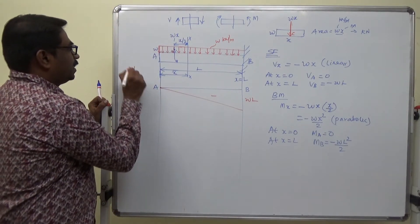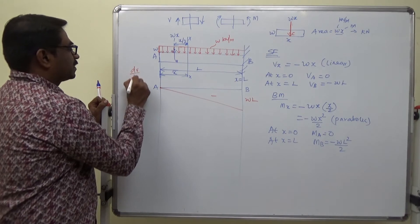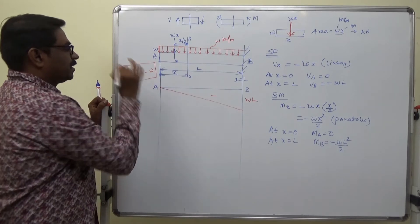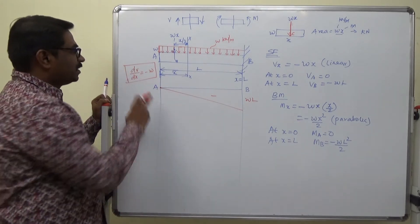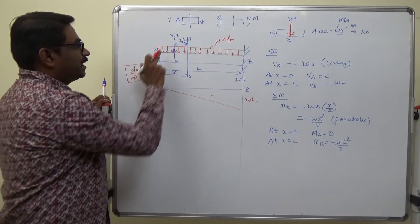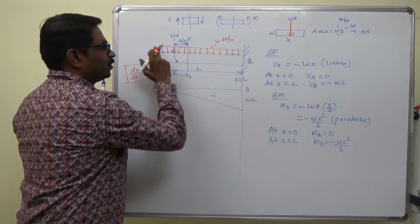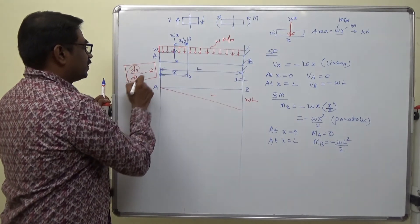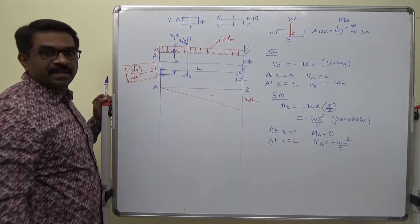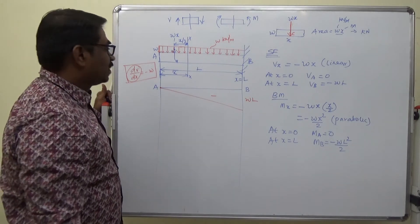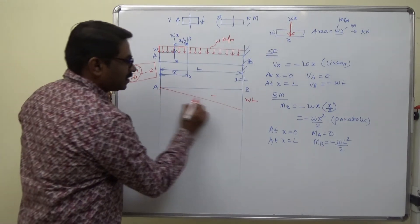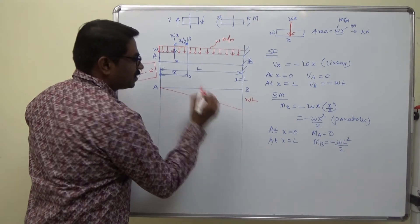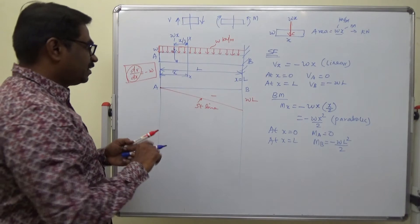dV by dx equal to minus W. This is the expression we have. Now see the relation. When it is uniform or constant throughout the length, the slope in the shear force diagram is also constant. Here the straight line slope is constant.